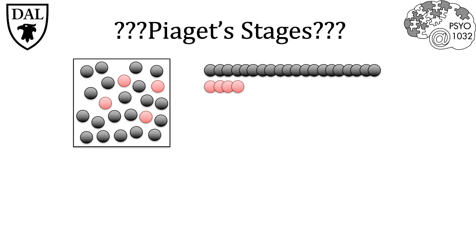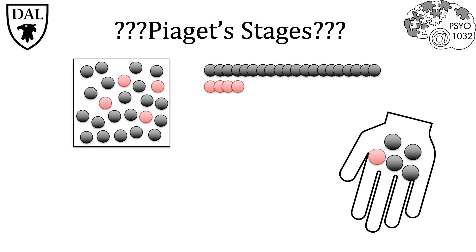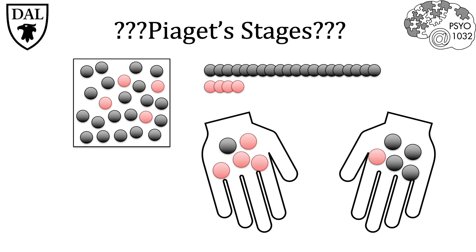The researchers then put their hands into the box and pulled out different combinations of red and black balls. When researchers pulled out an expected hand of many black and very few red balls, the babies paid little attention. However, when researchers pulled out many red and few black balls, babies spent a significant amount of time focusing on that hand. Researchers therefore concluded that the babies were recognizing this as an unlikely event, suggesting they understood that a sample from the box should reflect its contents — many black balls and few red balls.